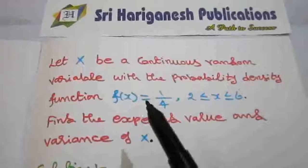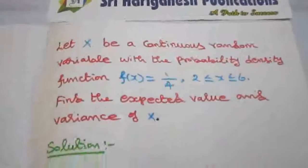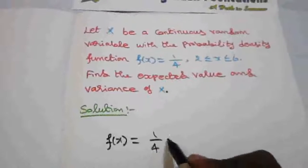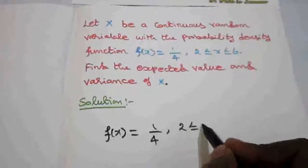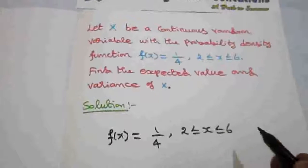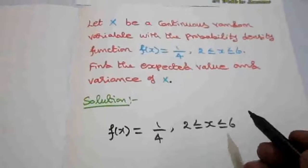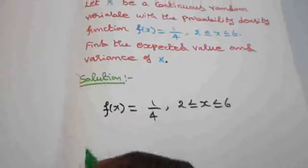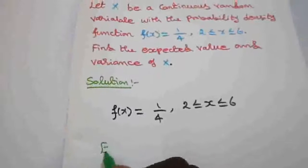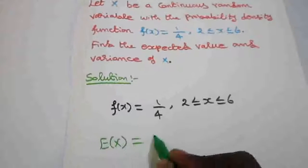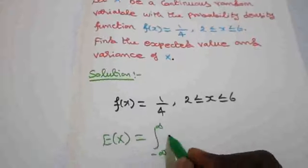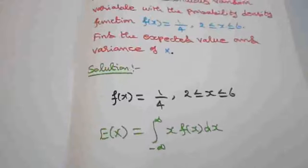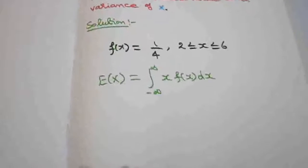The given probability density function is f(x) = 1/4, in the interval 2 ≤ x ≤ 6, and x is a continuous random variable. We want to find E(x). The formula for E(x) for the continuous random variable is the integral from minus infinity to plus infinity of x·f(x) dx.